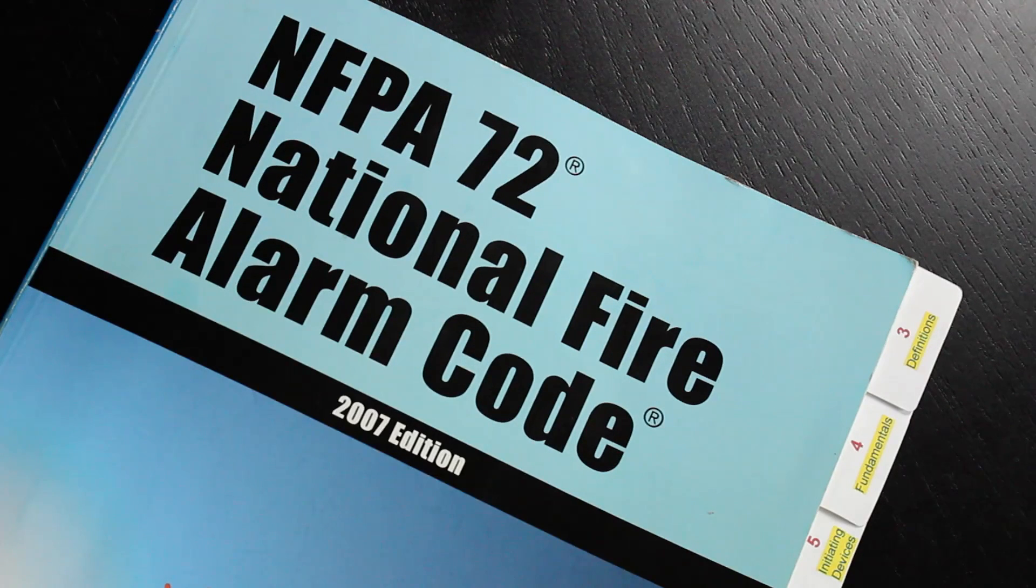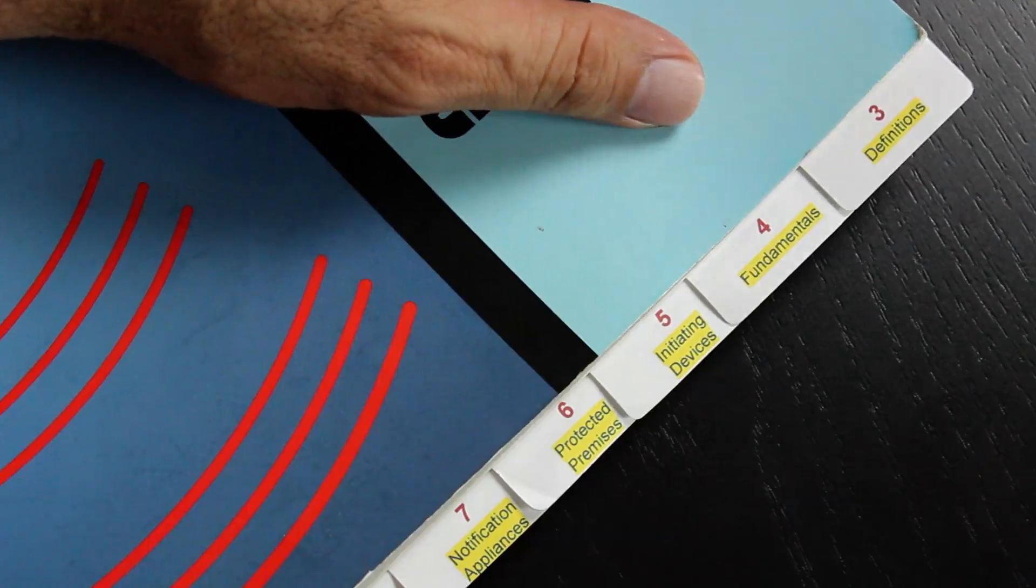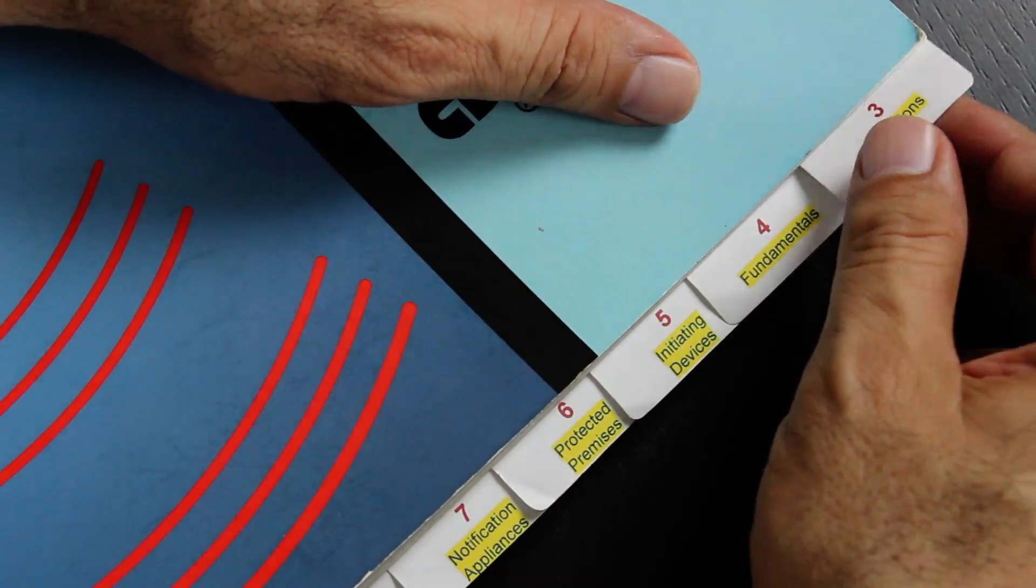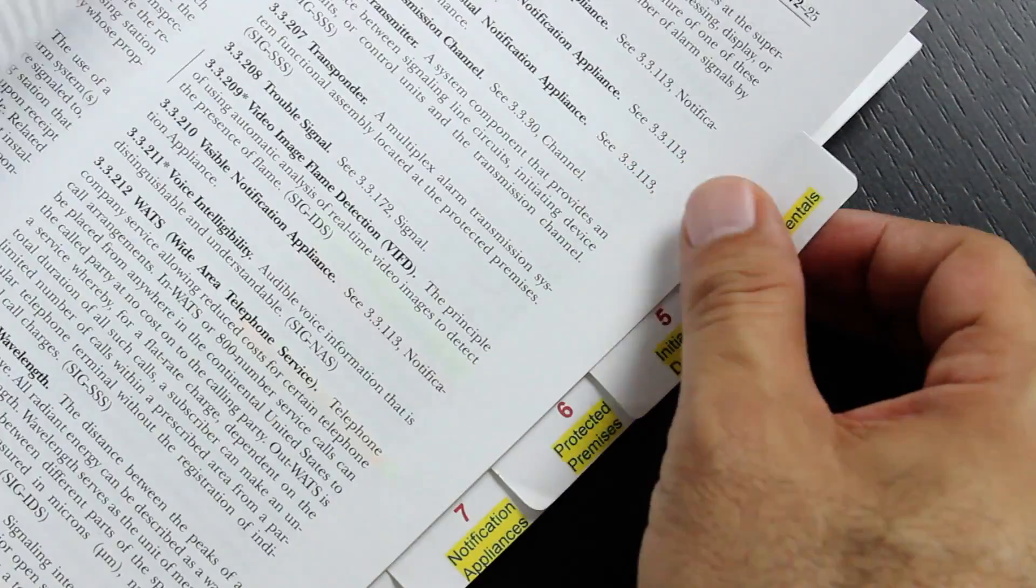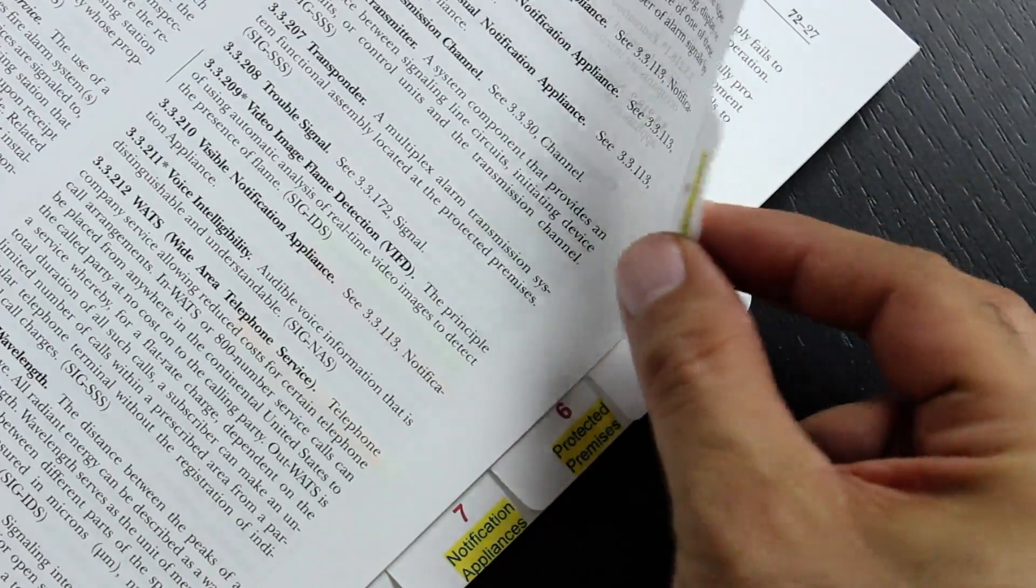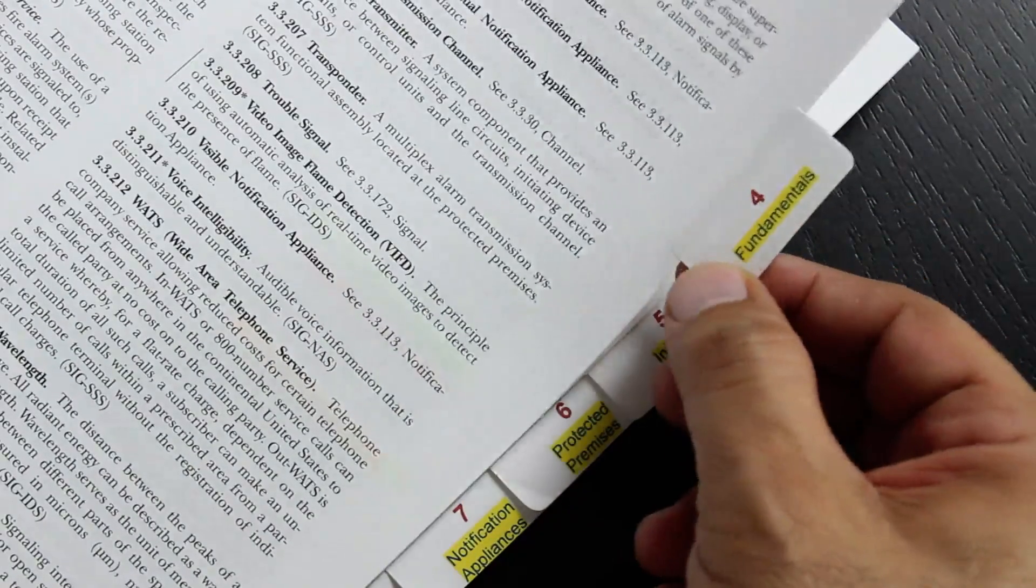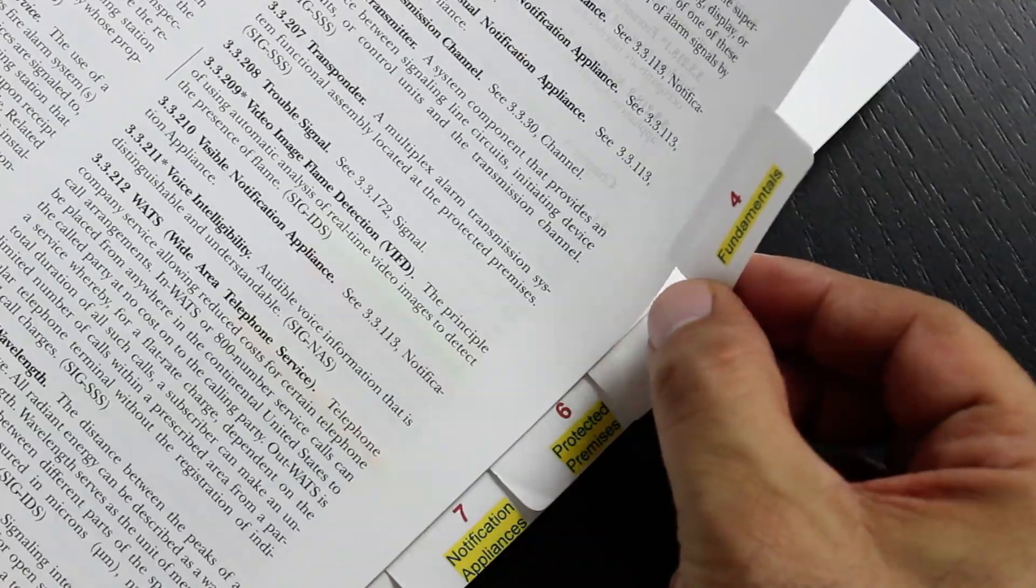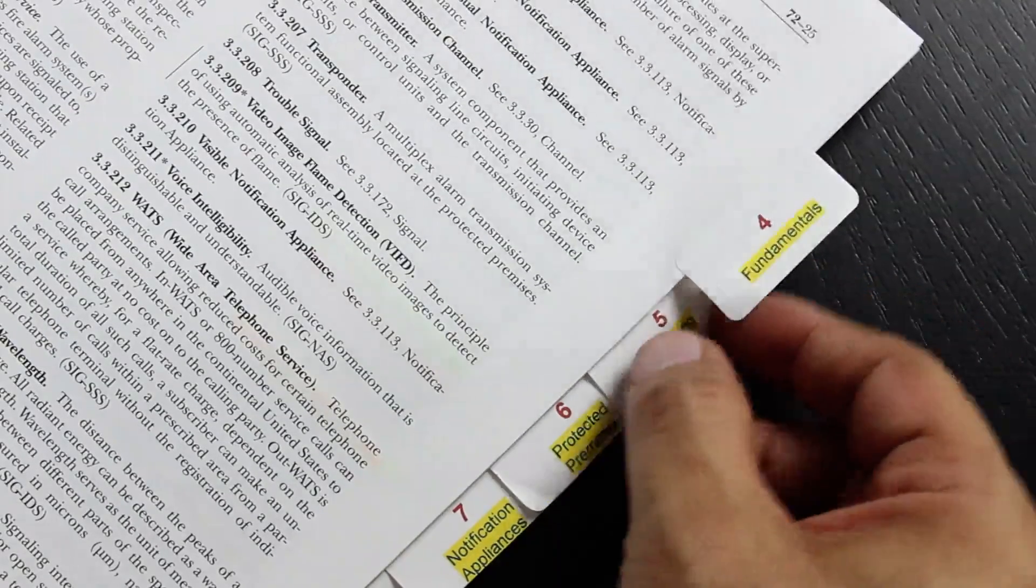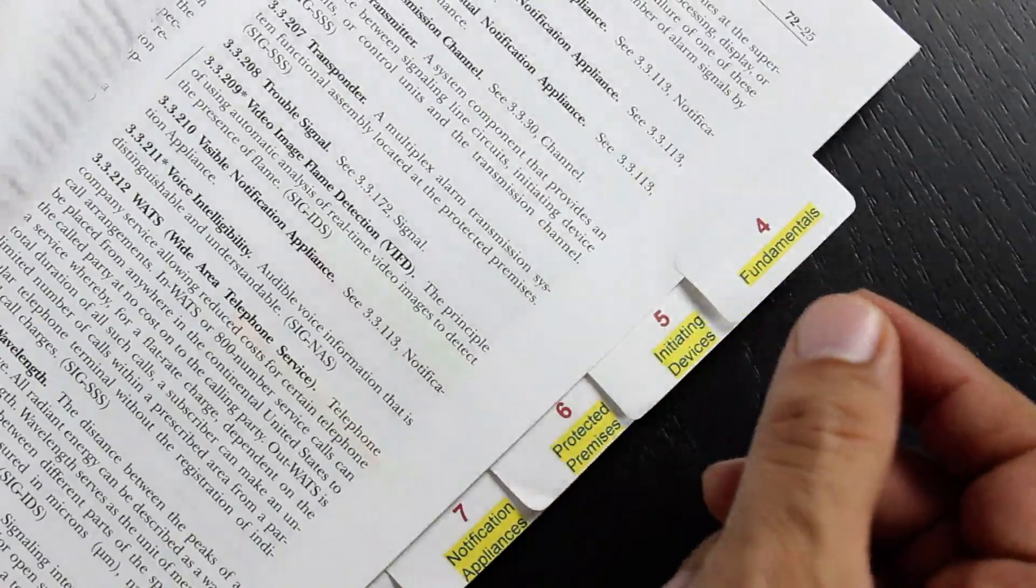NICET policies regarding books is: you can tab your books like I did here. However, the tabs should be permanent. Those tabs should be permanent. You cannot just put a sticky note with a bunch of sticky notes that you can take easily and rearrange. Your tabs should be part of the page.